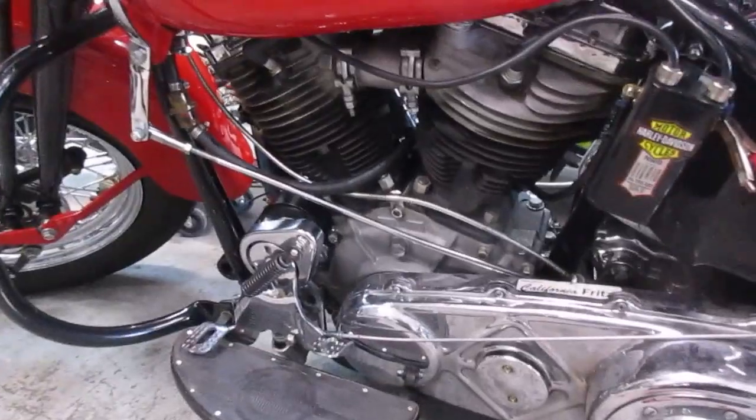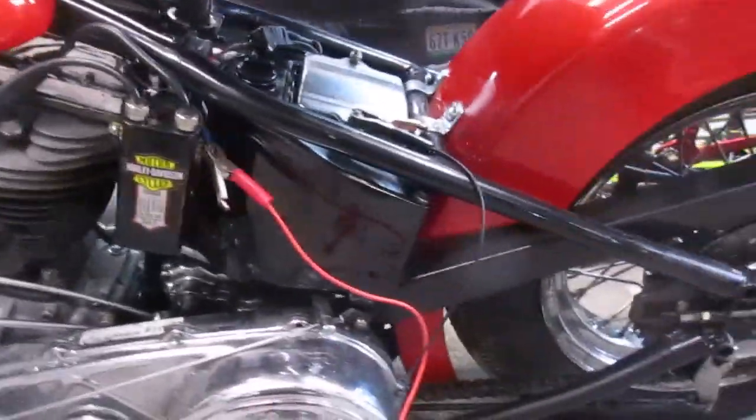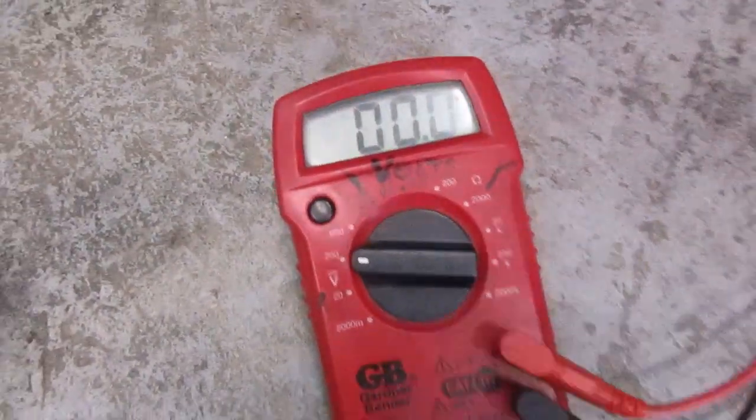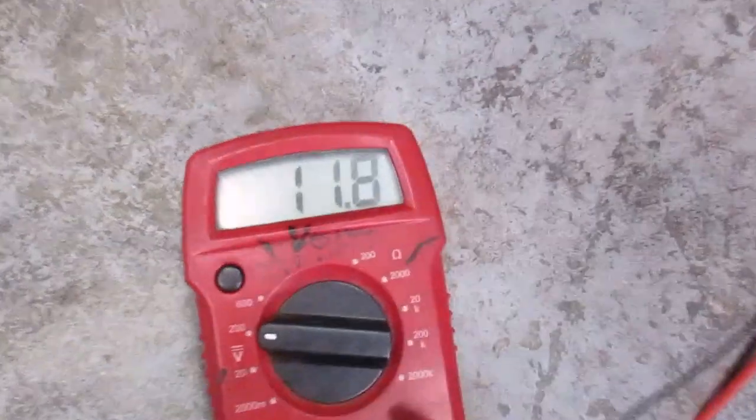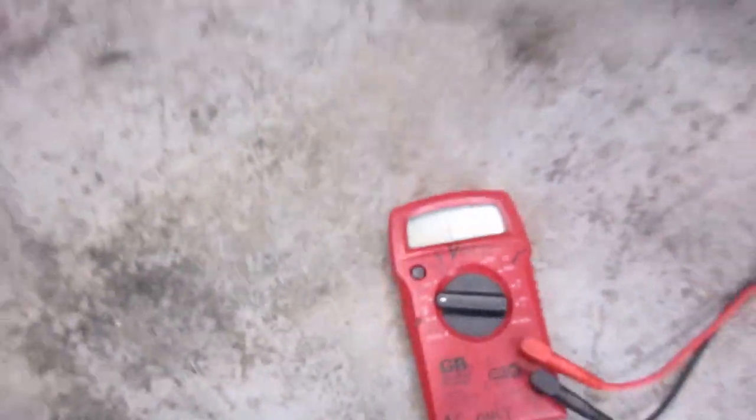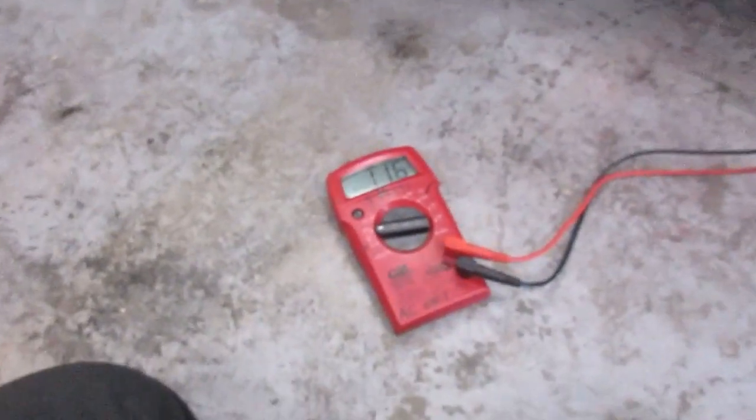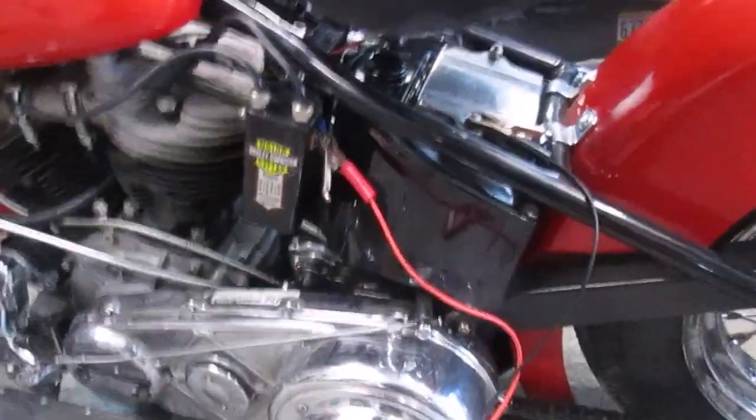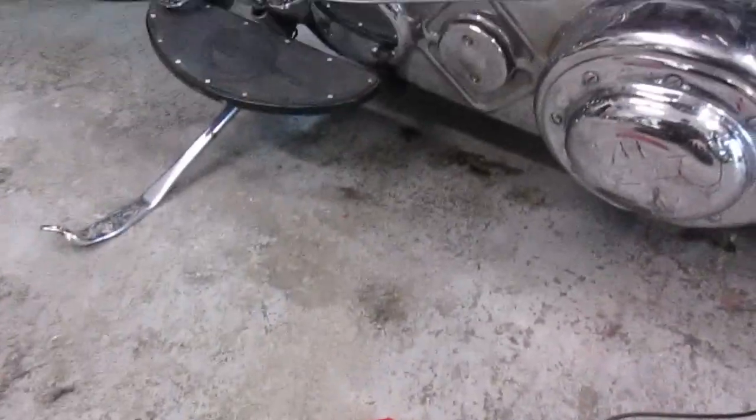We're going to check the battery first. I have just a regular voltmeter. Hook it up to the battery and see what it's putting out. 11.6, 11.7. That's pretty normal for a battery that's been sitting for a while. You should get more like 12 volts.